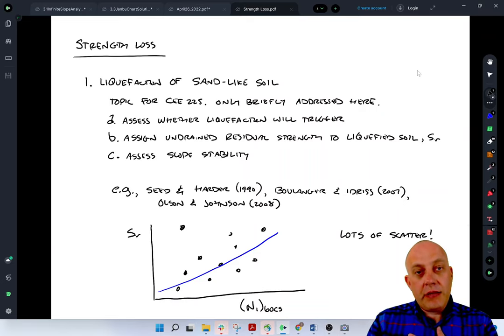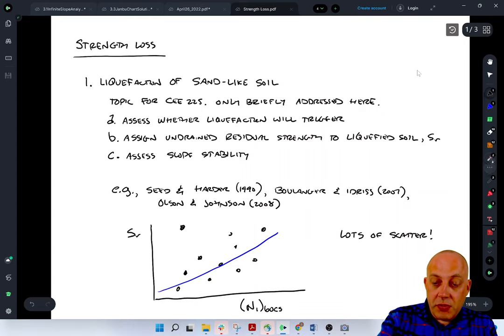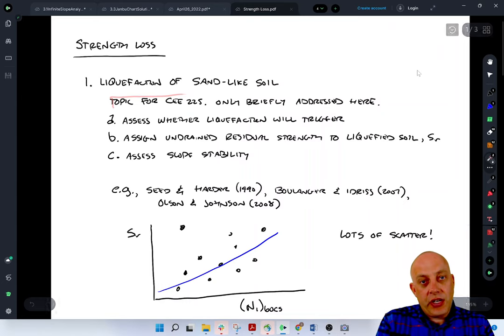All right, I'm going to talk very briefly about loss of strength due to earthquake loading. This is really a topic for our earthquake engineering course, the E225, where you would go through this in quite a bit of detail, maybe over the span of many weeks. What I want to do is just talk about how some of the concepts that we teach in our earthquake engineering class are really applied in the context of slope stability. So I'm going to skip over a whole lot of details here, and if you're interested in the earthquake engineering aspects, you really should take our E225 class.